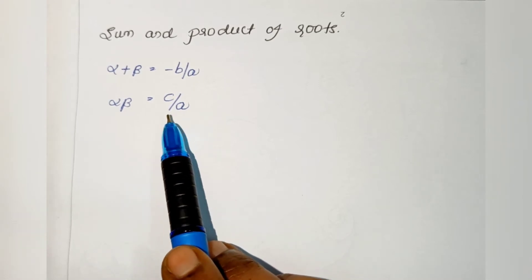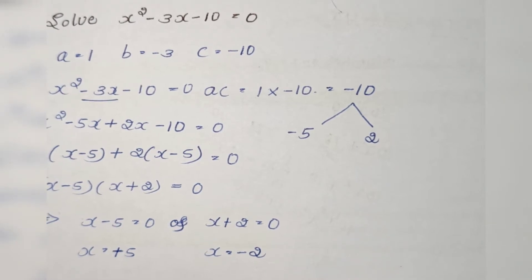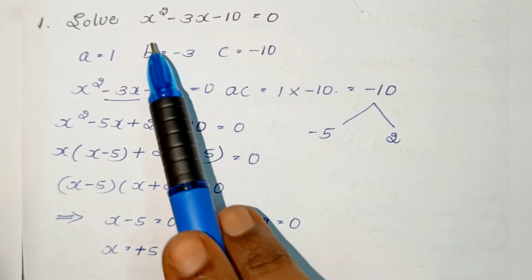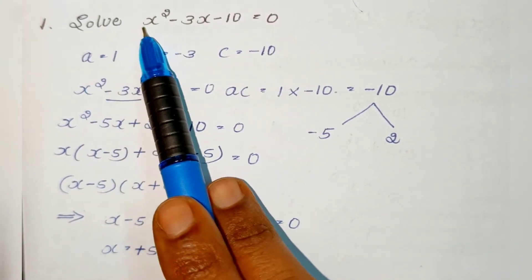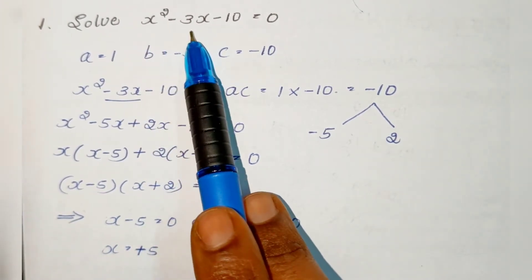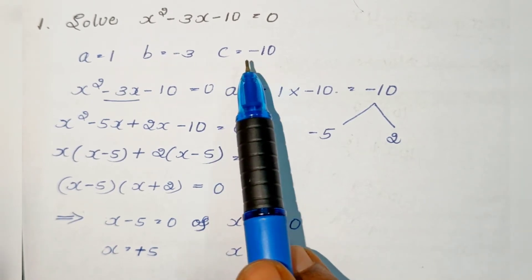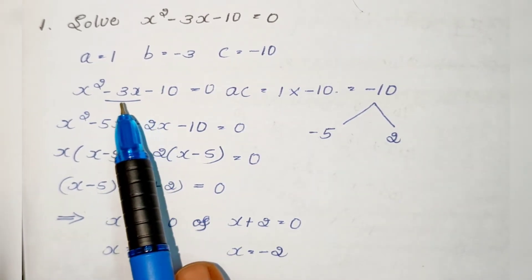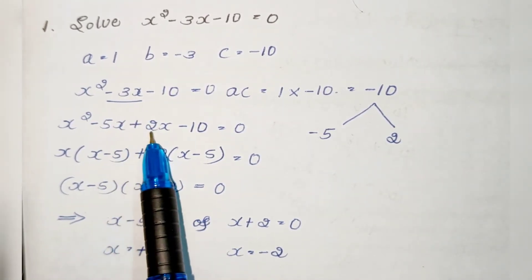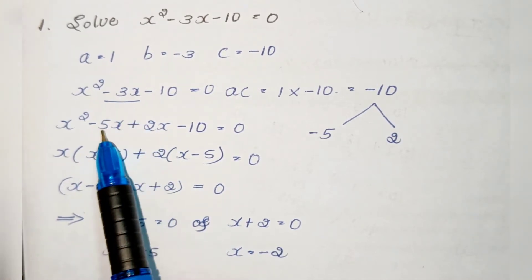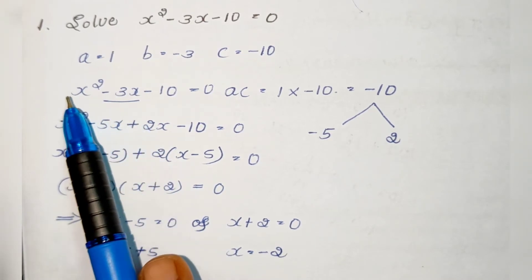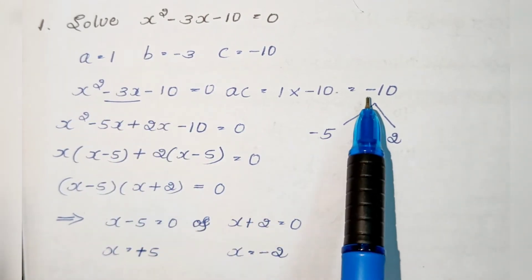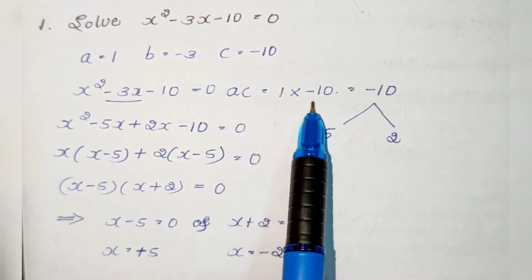Let us solve: x² − 3x − 10 = 0. Here a = 1, b = −3, c = −10. We solve this by splitting the middle term −3x. The sum of the split terms must equal the coefficient of x, and the product must equal the product of the coefficient of x² and the constant term, that is, 1 × (−10) = −10.